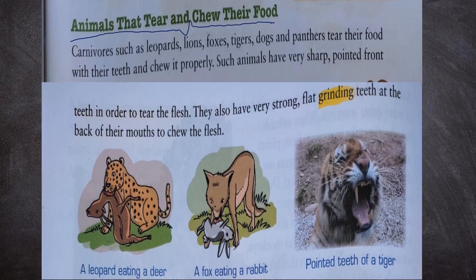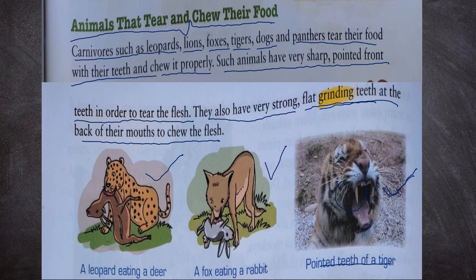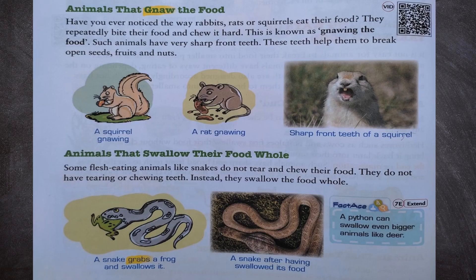Now let us see animals that tear and chew their food. Carnivores such as leopard, lion, foxes, tiger, dogs and panthers tear their food with their teeth and chew it properly. Such animals have very sharp pointed front teeth in order to eat the flesh, and also very strong flat grinding teeth at the back of their mouth. We can see a leopard eating a deer, a fox eating a rabbit, and the pointed teeth of a tiger.